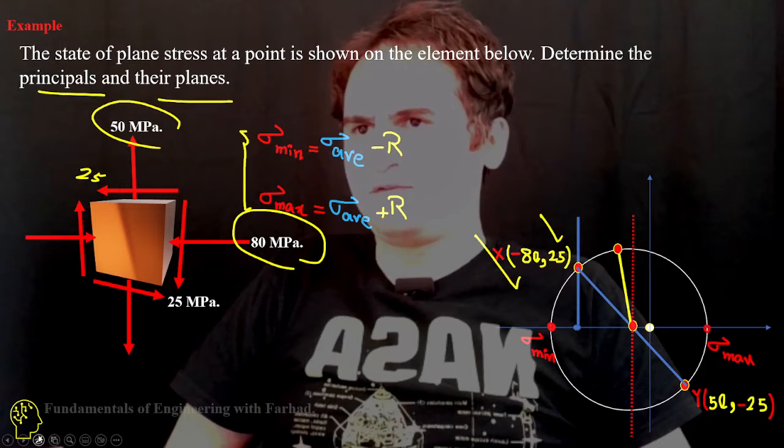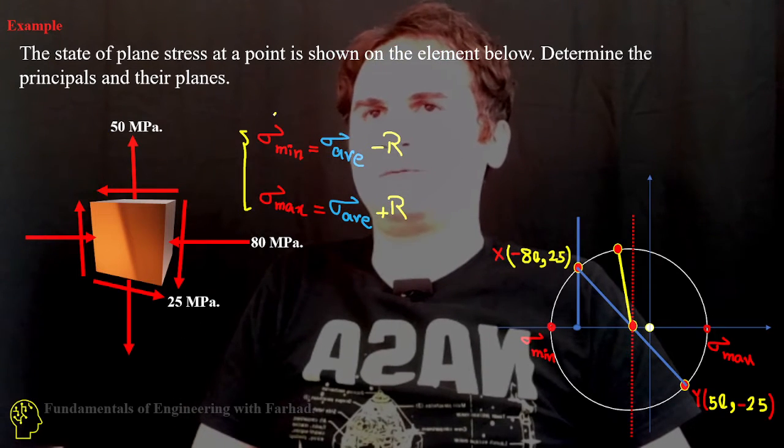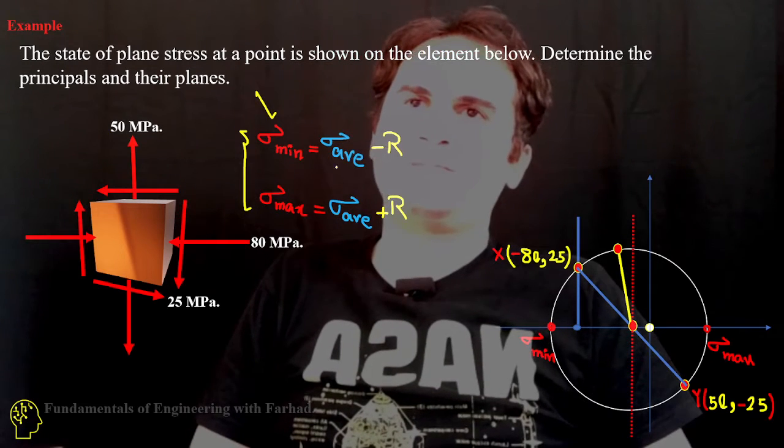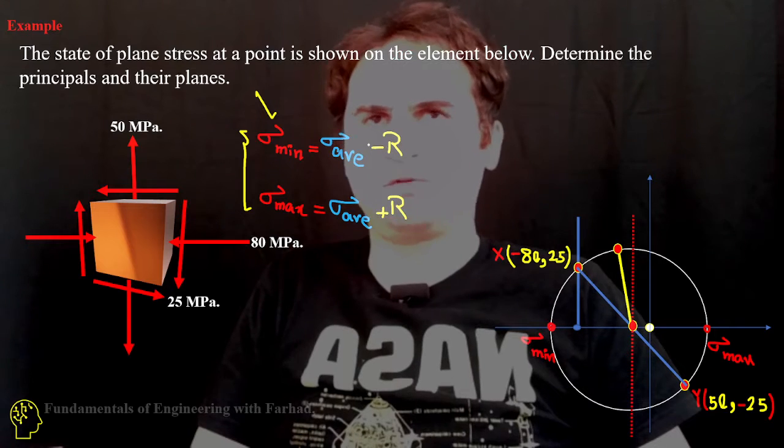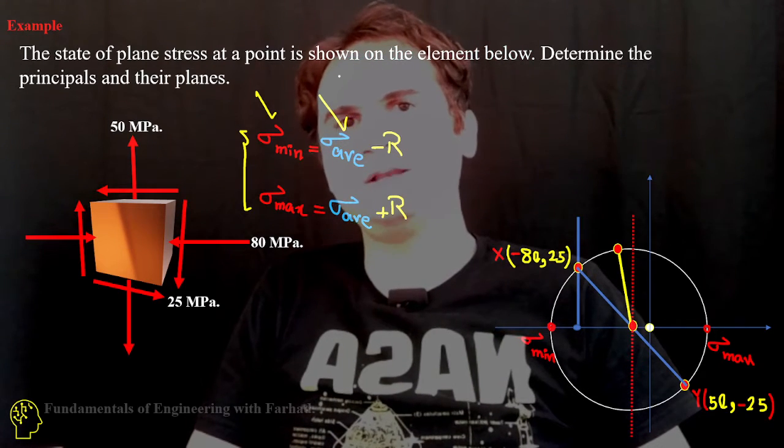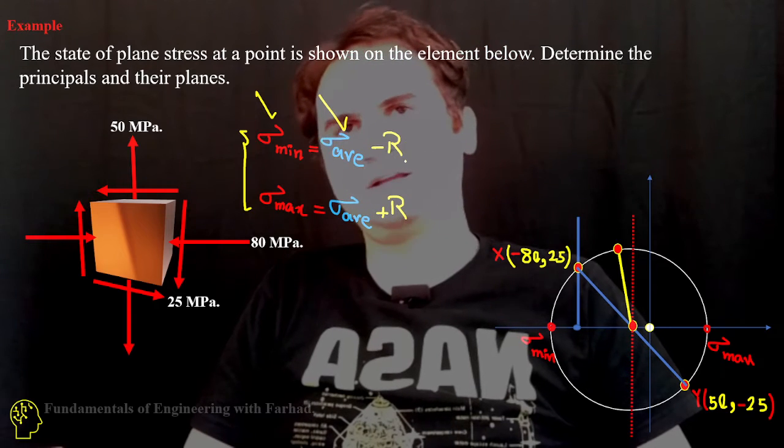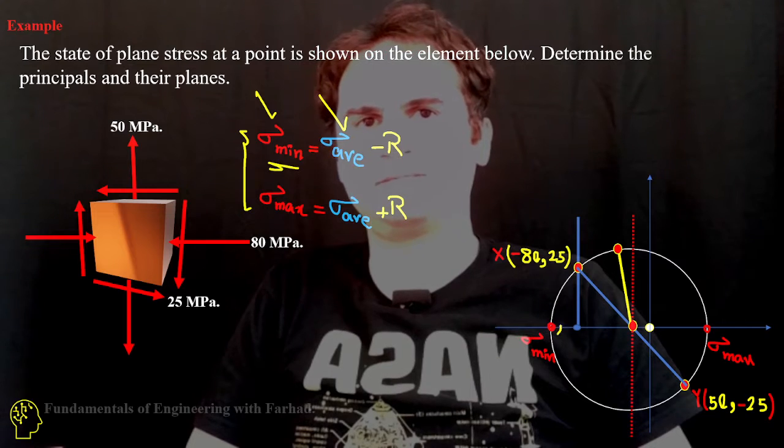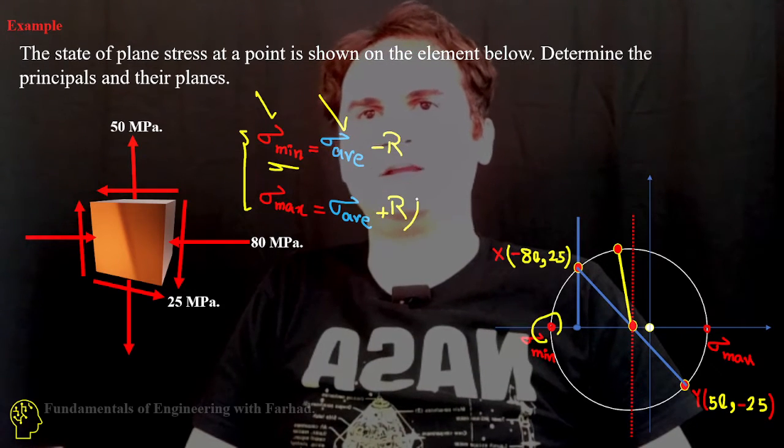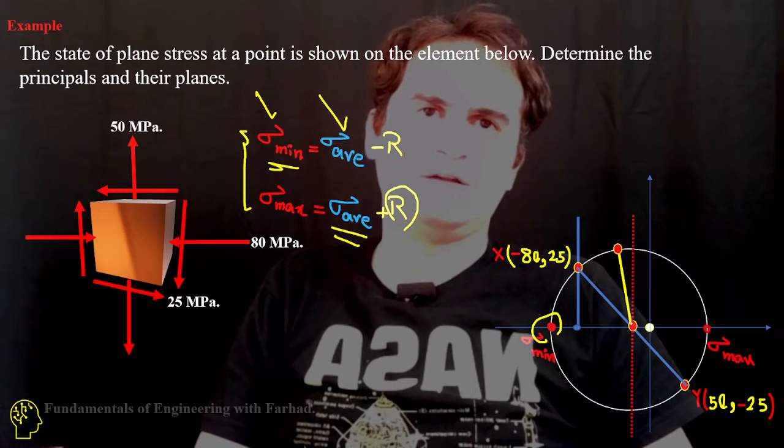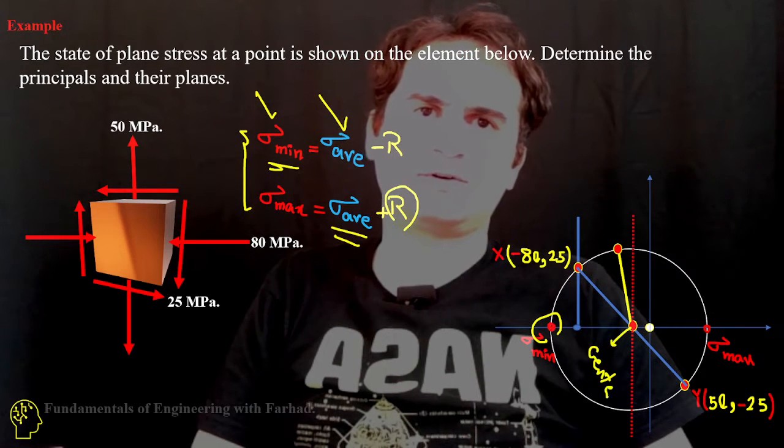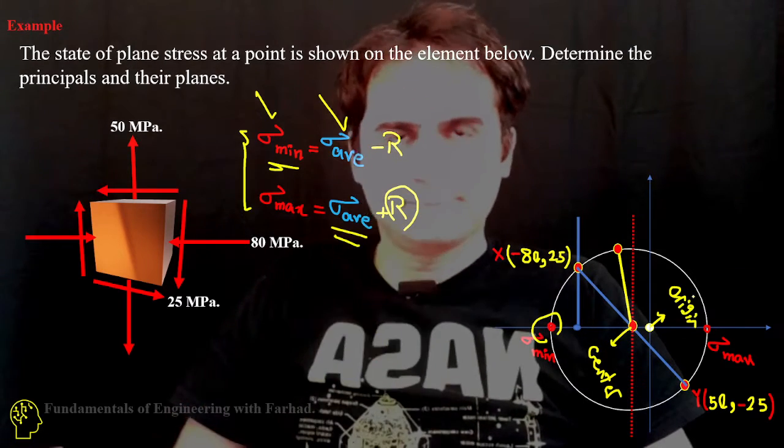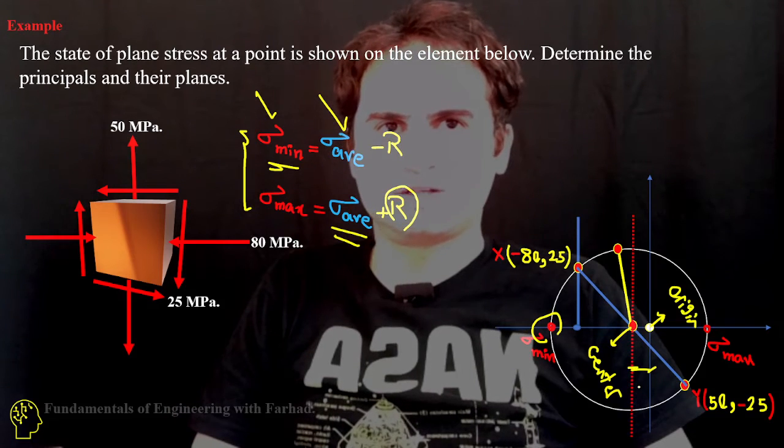If you want to calculate them from Mohr circle, you can easily see sigma minimum from the formula of Mohr circle is sigma average minus the radius. If you subtract the radius from the sigma average, you get to the minimum here. If you just add the radius to the sigma average, and if this is our center of Mohr circle and this is our origin, this is simply sigma average.